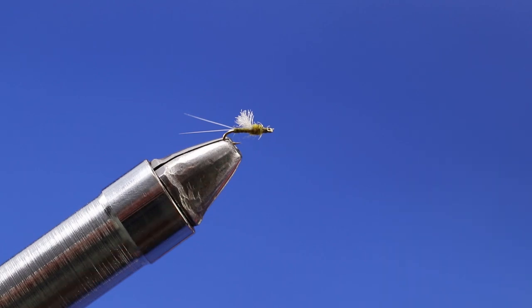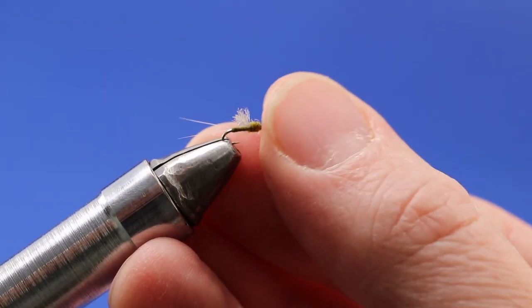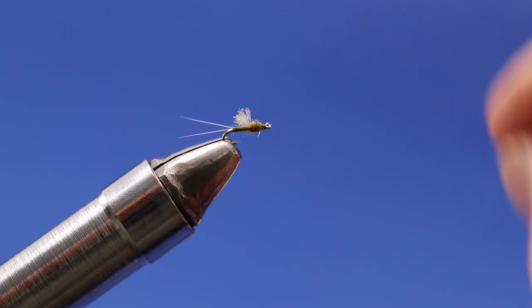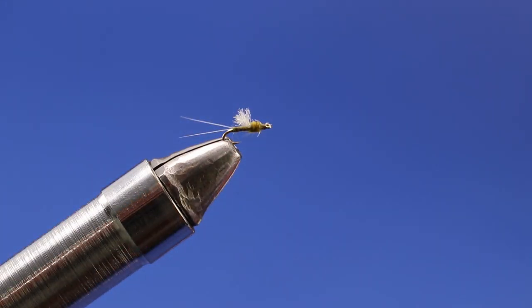As far as fishing this, I think Uncle Ralph's favorite RS2 combo is behind a parachute Adams, you know, 18 or 20 inches back, kind of as a dropper and merger off that.